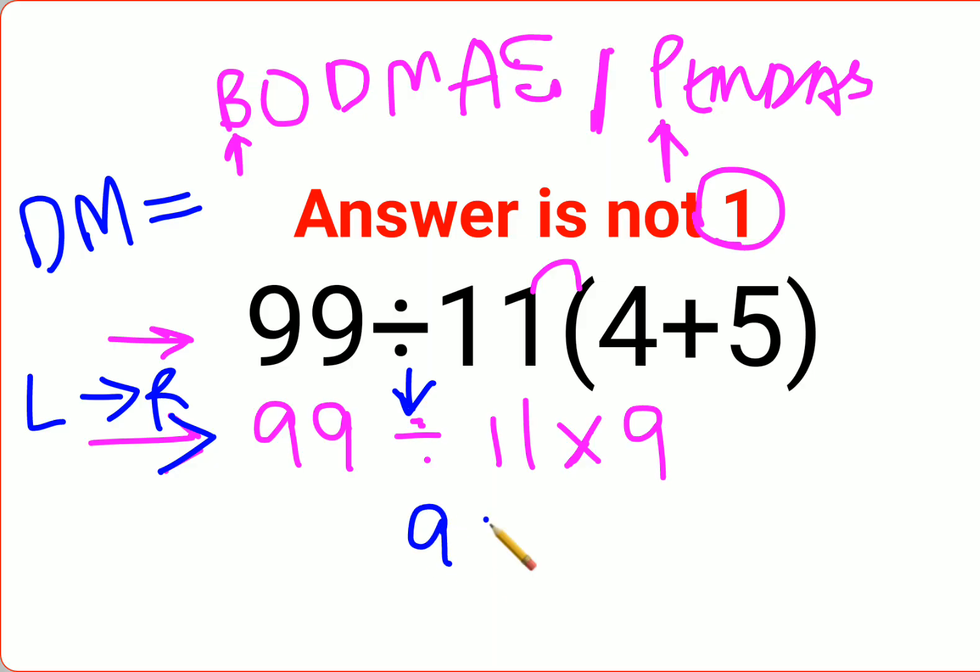99 divided by 11 is 9 multiplied by 9. The answer for this question is supposed to be 81.